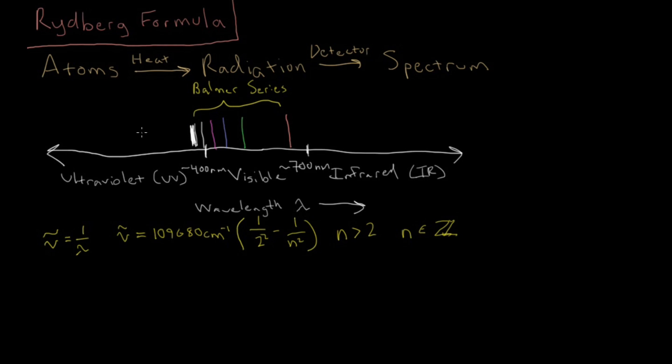Then, let's notice that there's another set of lines up in the UV region that again become increasingly tight and converge to some value there, and this set of values is referred to as the Lyman series, probably named after some scientist named Lyman.